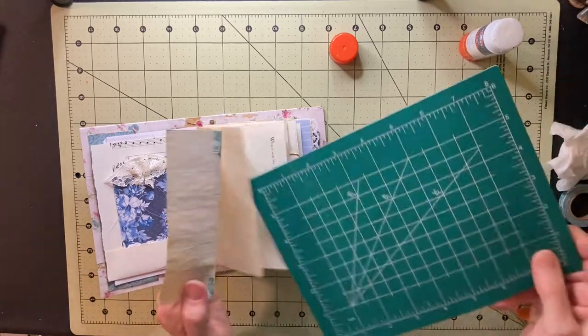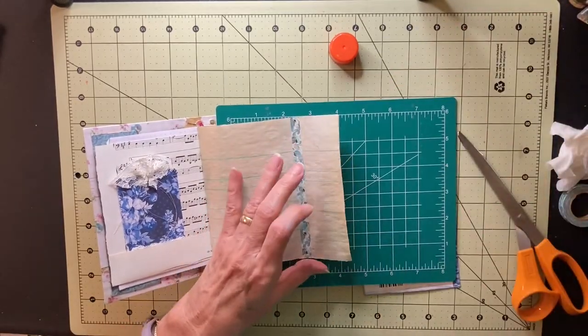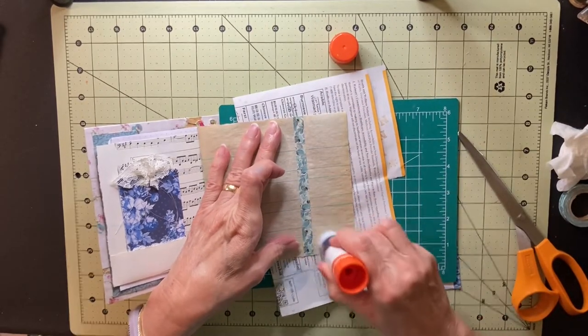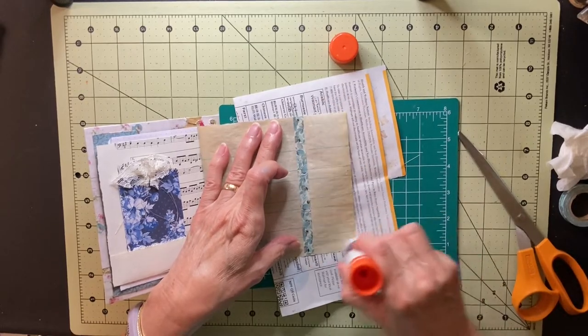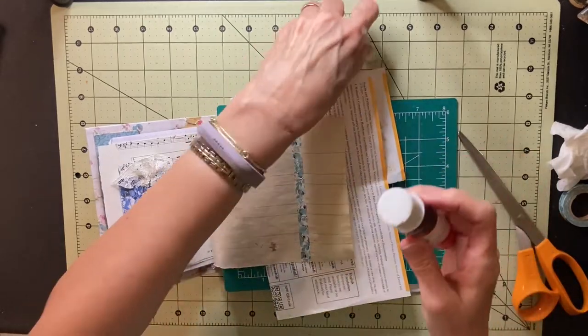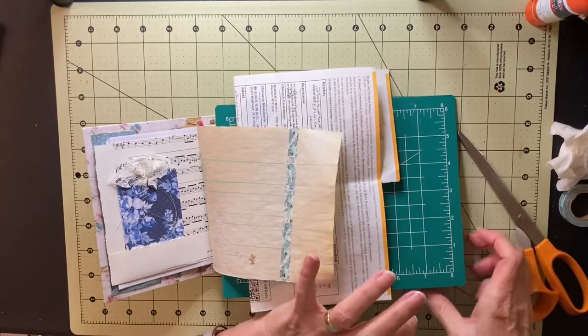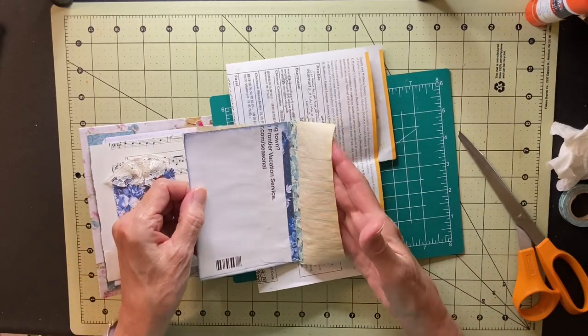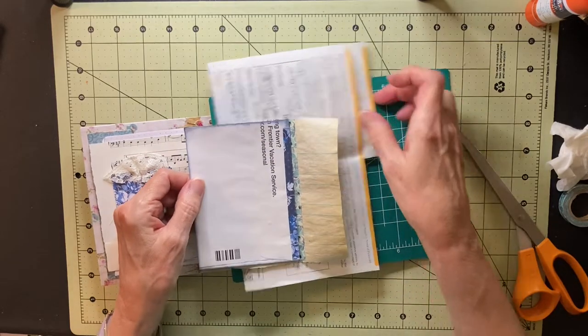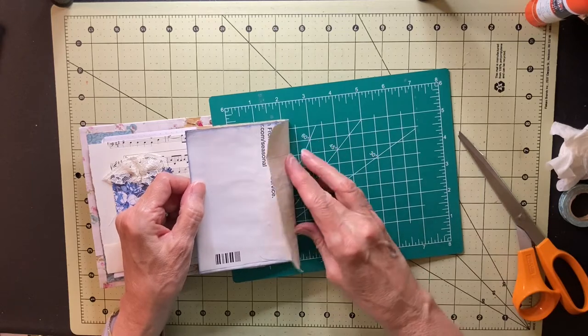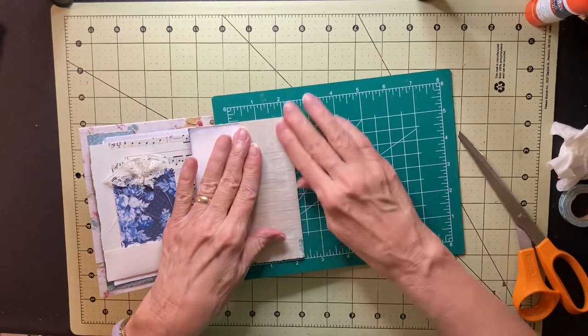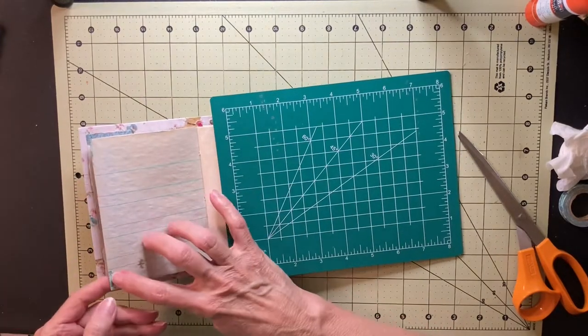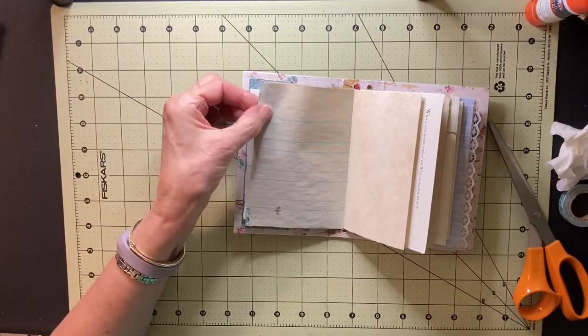Now, back to where we were. I'm going to glue this in here. And then that will flip out this way. I'm going to put my glue on this side of this. And I don't want glue all over my mat, so I'm going to put this down again.